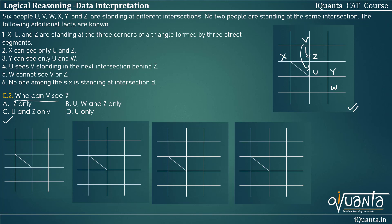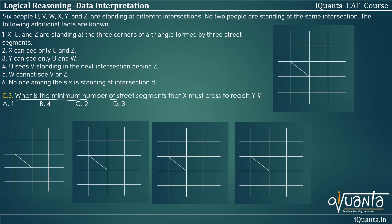The third question is: what is the minimum number of street segments that X must cross to reach Y? From the valid arrangement, one possible path uses two streets. Another path goes via three streets. So the minimum number of street segments X must cross to reach Y is two. Option C is the correct answer.